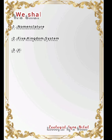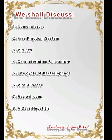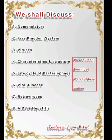In this chapter, we shall discuss nomenclature, the 5 kingdom system, viruses, their characteristics and structure, life cycle of bacteriophage, viral diseases, retrovirus, AIDS and hepatitis.